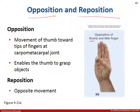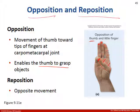Opposition and reposition are limited to the thumb — you may have heard of the opposable thumb. Opposition means you can touch the thumb to the tips of all your other fingers, enabling you to grasp objects and do fine detailed work. Think about holding a pen to take notes — that's opposition, thumb meeting your first digit. Reposition is simply bringing it back to normal position.